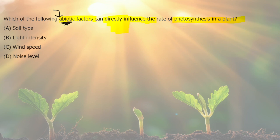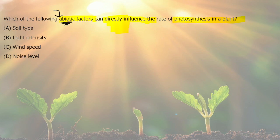Abiotic factors include things like climate, geology, soil composition, groundwater availability, the presence of water bodies like a lake, a river, or the ocean, light, and atmospheric conditions. When we look at our answer choices, we can see different abiotic factors, and we need to find the one that directly influences the rate of photosynthesis.